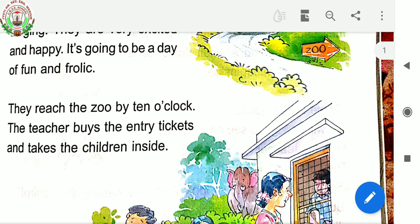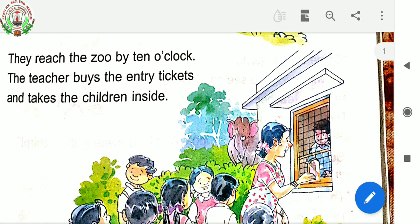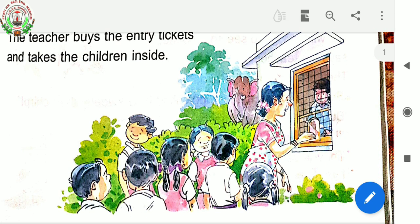Coming to the third paragraph: they reach the zoo by 10 o'clock. The teacher buys the entry tickets and takes the children inside. You can see in this picture, the teacher is standing in front of the counter and she is buying entry tickets, and she takes the children inside the zoo.